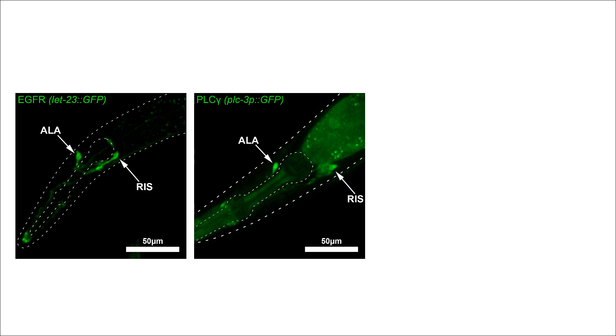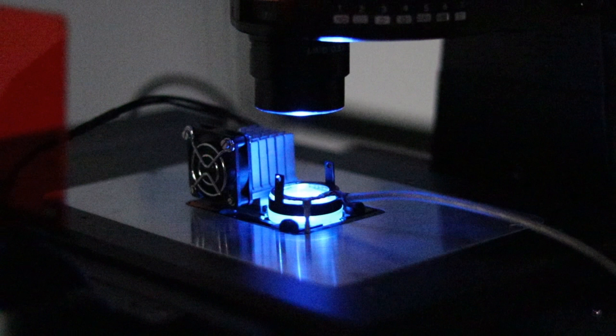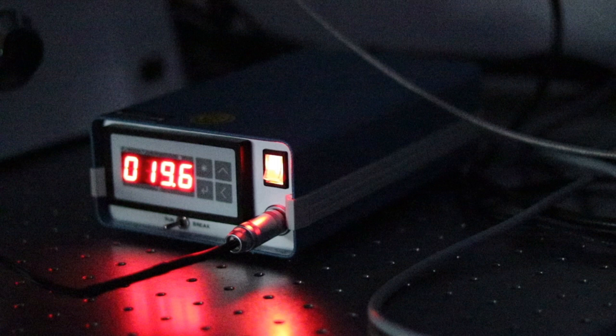To find out how ALA and RIS act in sleep following cellular stress, we used a Peltier element to apply a heat shock to the worms, which were grown in microfluidic chambers and imaged using a microscope. The heat shock device enabled us to tightly control the timing of the applied stimulus. Worms were heat shocked at 37 degrees Celsius for 20 minutes.